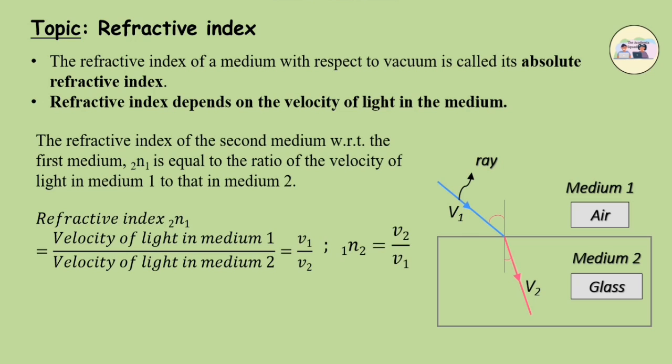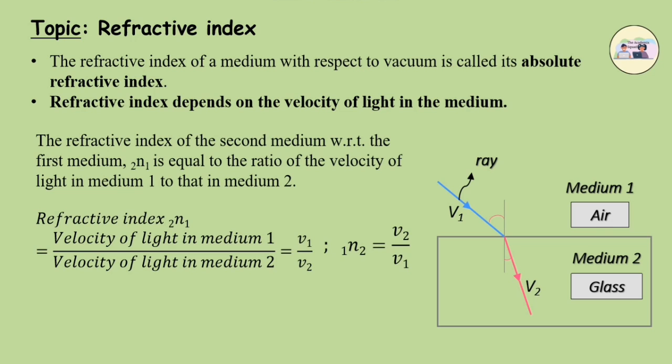Similarly, the refractive index of medium 1 with respect to medium 2, 1N2, equals V2 upon V1. If the first medium is vacuum, then the refractive index of medium 2 is called the absolute refractive index and it is written as N.